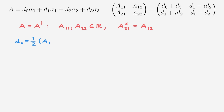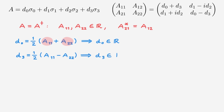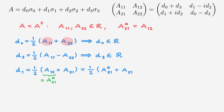Let's start with d0, which is equal to one-half times A11 plus A22. As A11 and A22 are real, the expansion coefficient d0 is also real. Similarly, d3 is equal to one-half times A11 minus A22, and therefore d3 is also real. For d1, we have the expression one-half times A12 plus A21. Using the fact that A12 equals the complex conjugate of A21, we can rewrite it, and since the sum of a complex number with its complex conjugate equals two times its real part, we get d1 equal to the real part of A21, meaning d1 is also a real number.